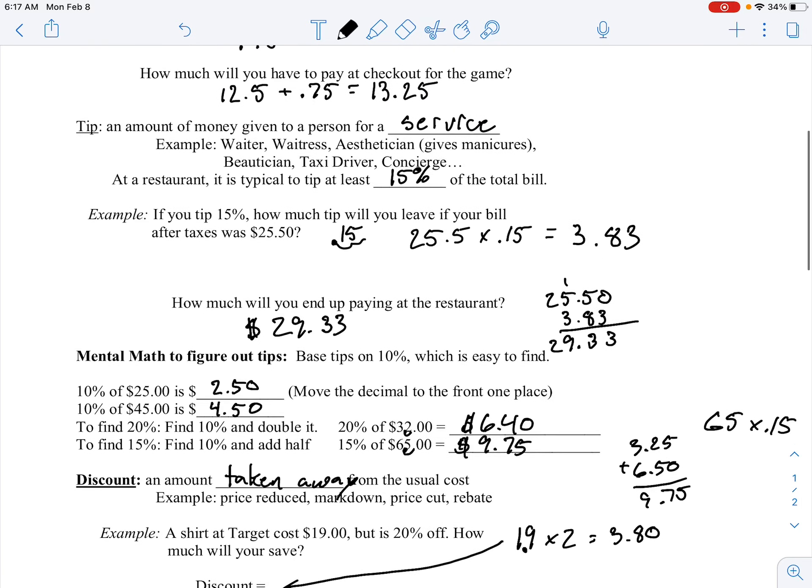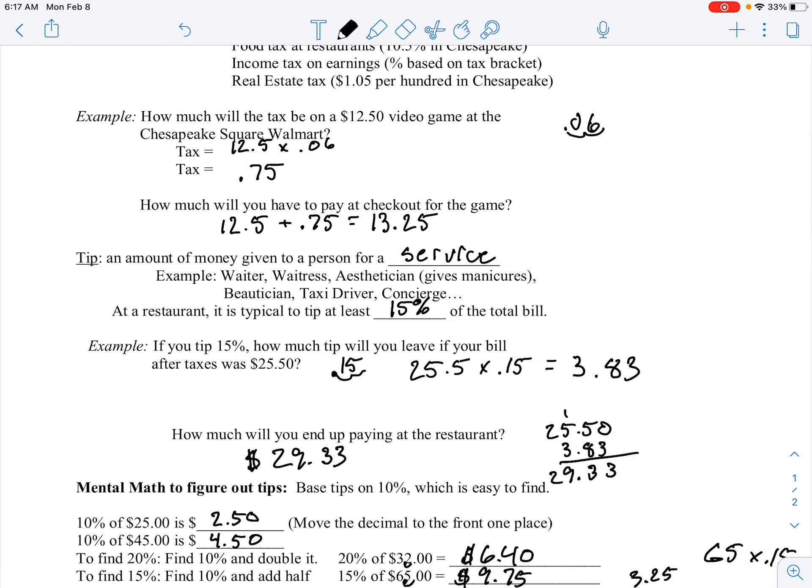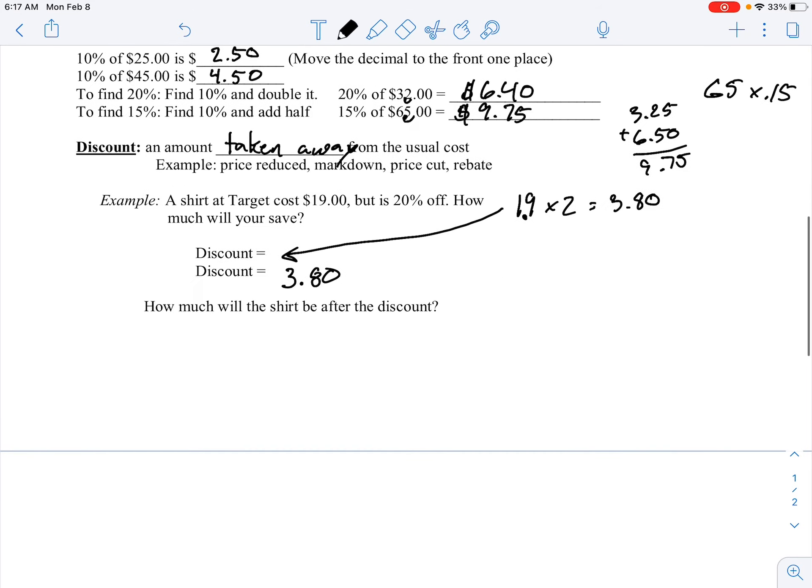So how much will the shirt be after the discount? Well, this is going to be kind of like our tax portion. So for taxes, we added that to our original price, right? And then for discount, we are going to take that away from our original price. So $19 minus $3.80 is going to leave us with, looks like after our discount, this shirt will cost $15.20.